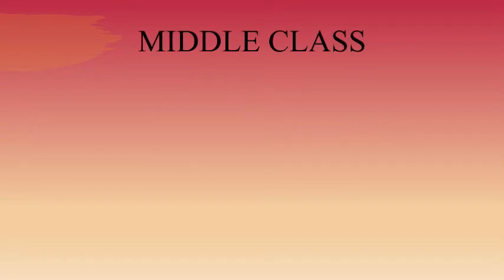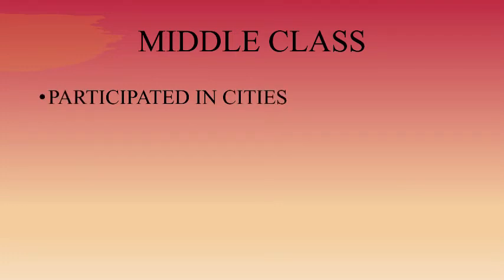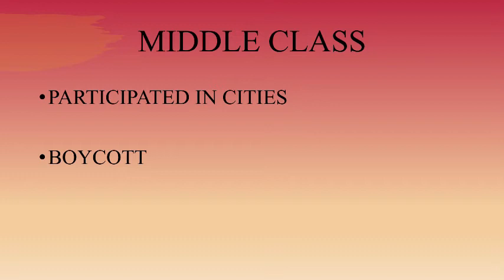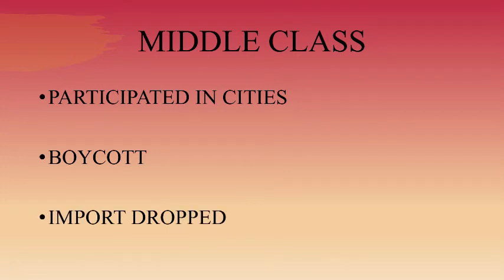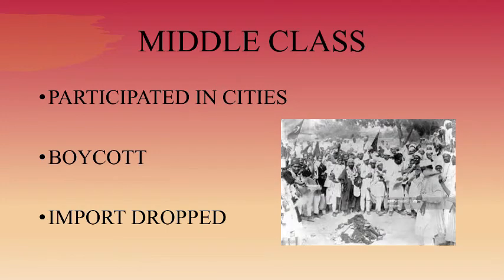The first group was the middle class, who started the movement in towns and cities. Students left government schools and colleges, teachers resigned, and lawyers gave up legal practice. Foreign goods were boycotted and foreign clothes burned in huge bonfires. As a result, the import of foreign goods declined from 102 crores to 57 crores in just one year. However, the movement slowed down because there were no alternative Indian institutions available.